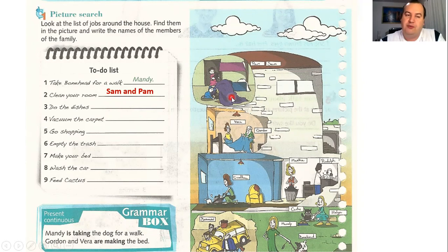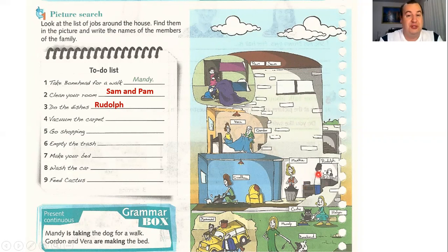Number three: do the dishes — who is doing the dishes? We have Rudolph. Rudolph is in the kitchen and he is doing the dishes. Number three, the right answer is Rudolph. Perfect. Number four: we have vacuum the carpet. Who's doing this action? This is so simple — carpet, almost Portuguese! Number four, we have Cynthia. Cynthia is vacuuming the carpet.